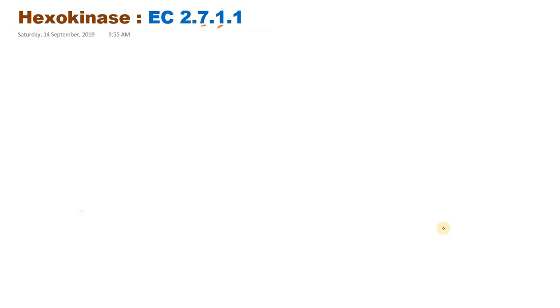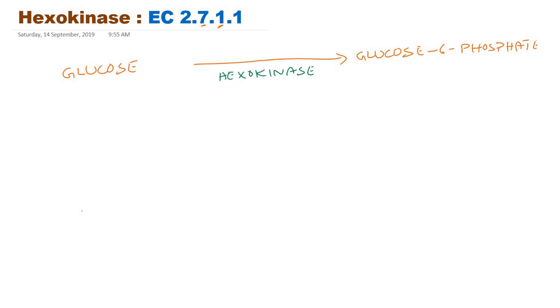What is the function of hexokinase? It catalyzes the conversion of glucose to glucose-6-phosphate. The phosphoryl group is donated by ATP; ATP donates one of its phosphoryl groups to glucose, is converted to ADP, and glucose is converted to glucose-6-phosphate. This is the first reaction of glycolysis.